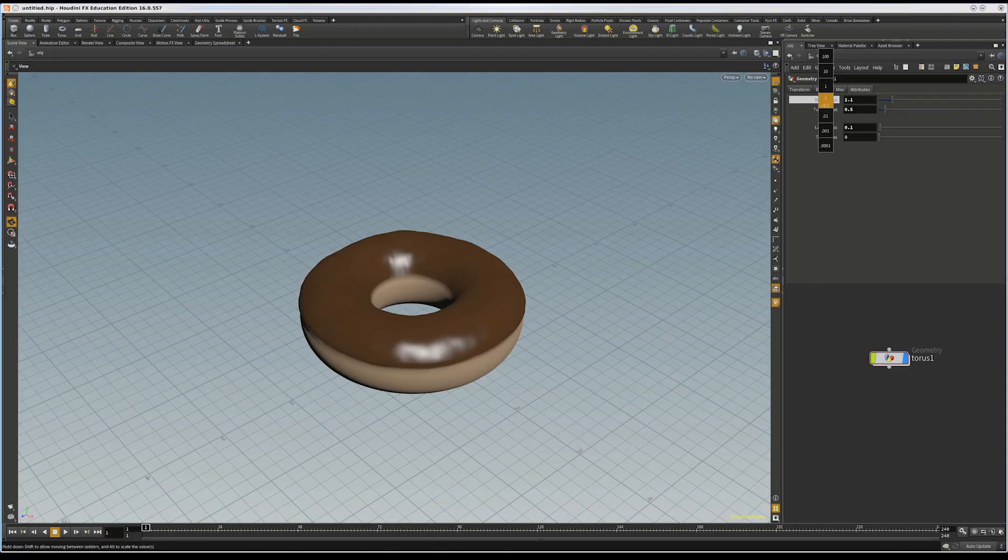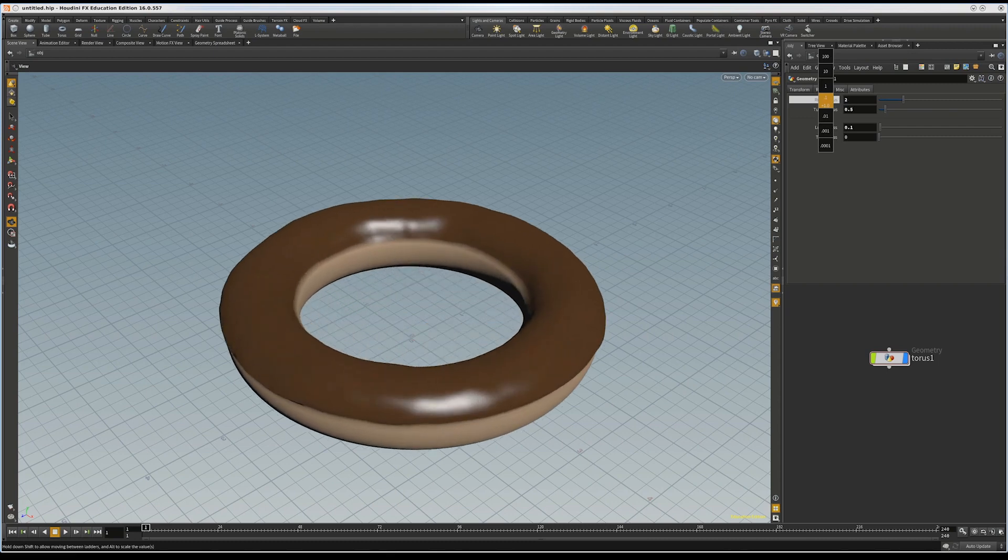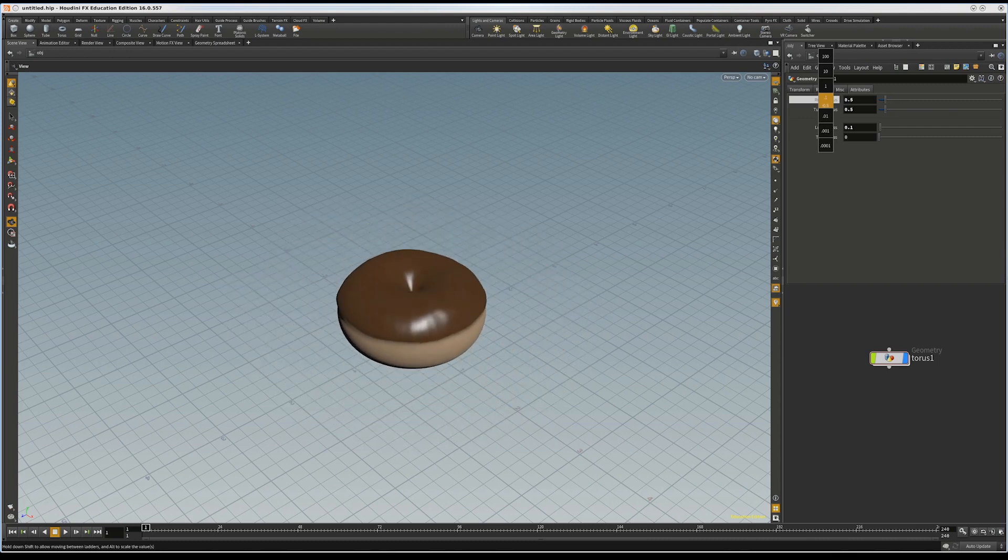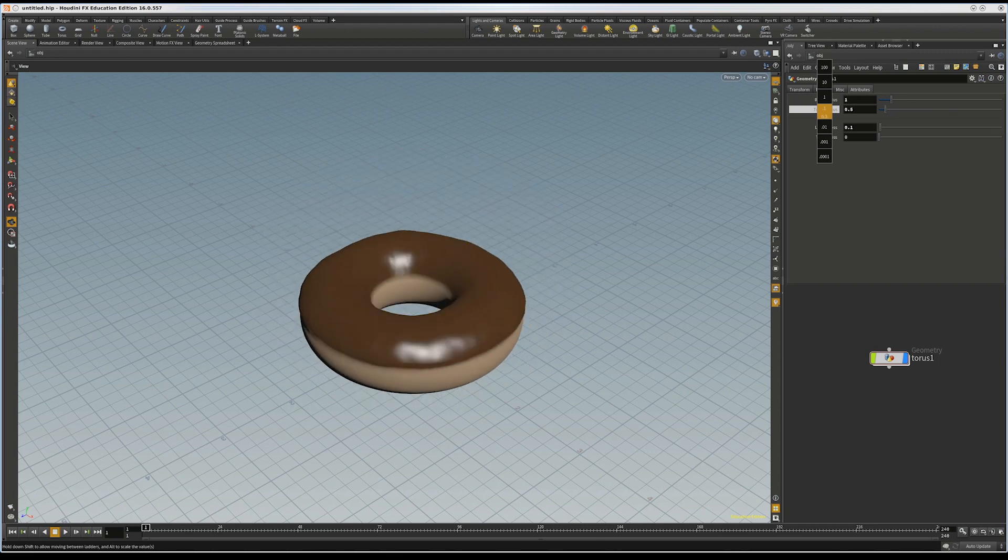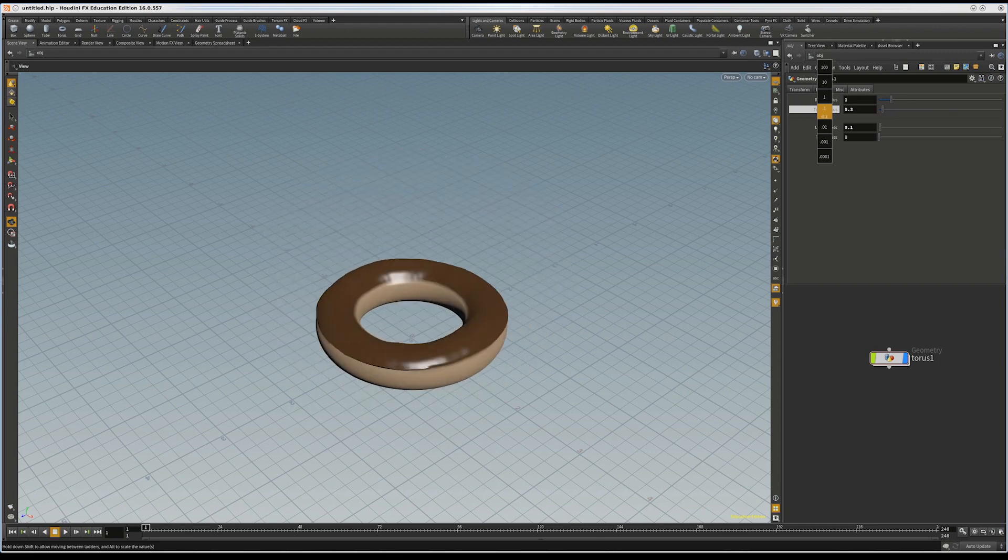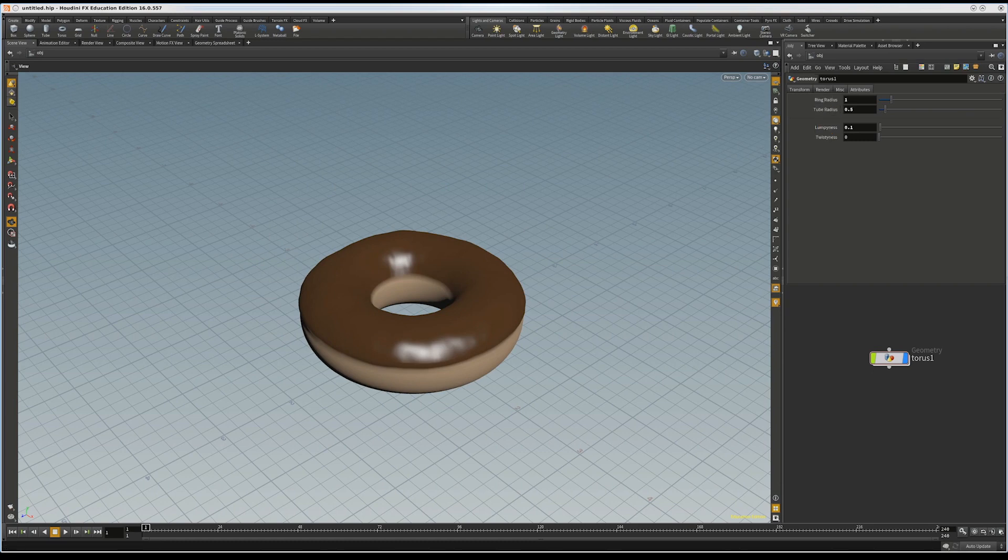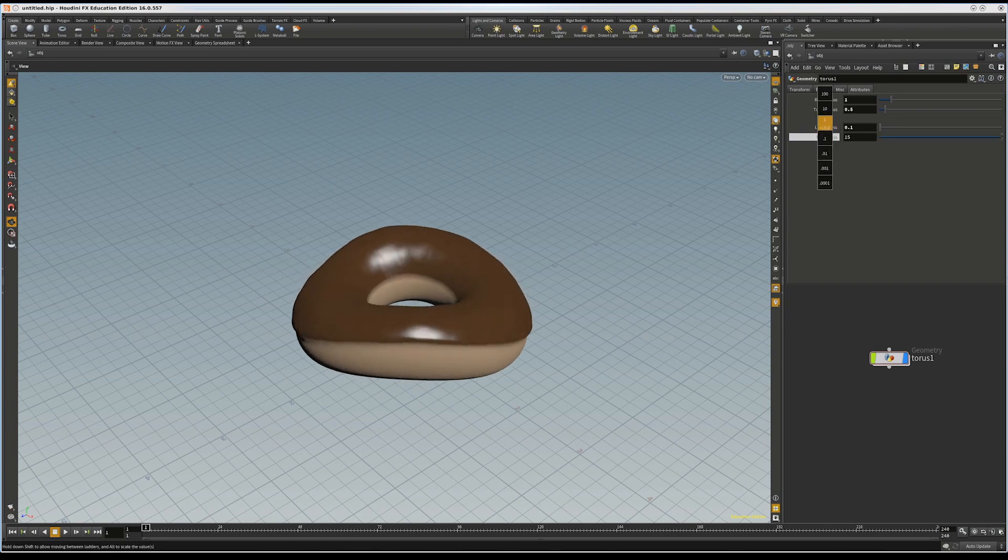A torus naturally has two geometry attributes that define what it looks like. A ring radius that determines how big the hole in the middle is, and a tube radius that determines how pudgy the torus is. However, we can add new geometry attributes as well. For instance, we can add a geometry attribute for how lumpy the torus is, or we can add one for how twisty the torus is. The key thing to keep in mind is that these attributes are different on every object, but the transformation is the same on every object.